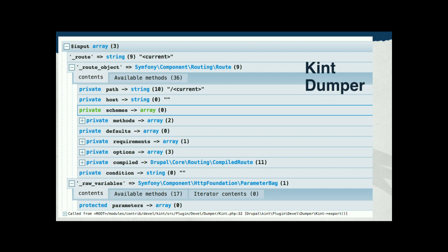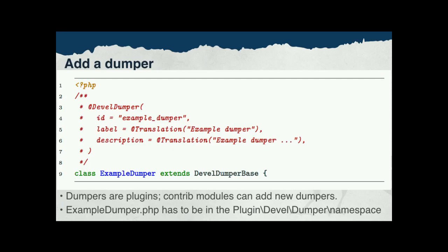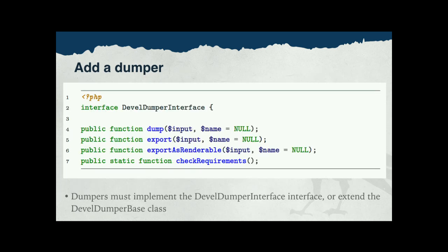Here's a look at the Kint Devel dumper plugin — make sure to try that one out. About coding your own dumper: there are a couple of pieces. You write a class, usually extending the Devel dumper base. You can do that from your own contrib or custom modules. In the annotation of your class there are different properties to describe — really just ID and label. The interface for Devel dumper requires you to handle events like dump, export, or export as renderable — really simple to write.